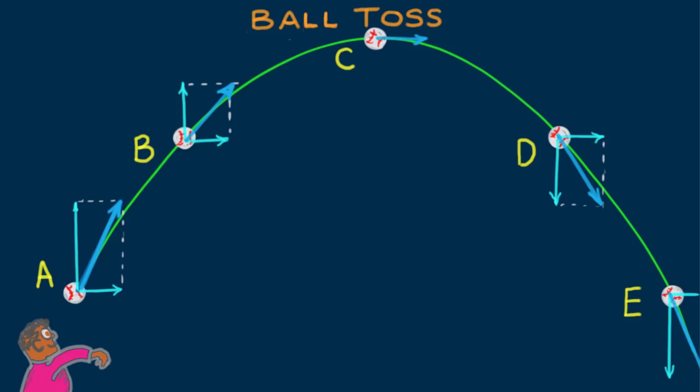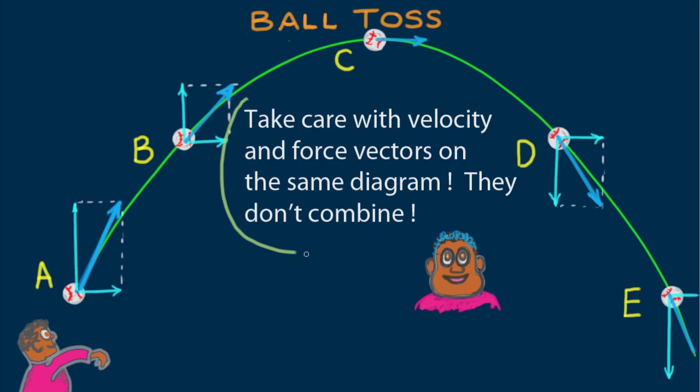To distinguish the two, we show force vectors in red, and velocity vectors in blue. Phil Physiker says it well: Take care with velocity and force vectors on the same diagram. They don't combine.